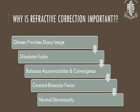Why is refractive correction important? Because glasses provide a very sharp image on the retina, then it stimulates fusion, thereby helping in stereopsis. It enables the patient to have stereopsis, and the glasses balance between accommodation and convergence, and also give constant binocular fusion and normal stereo acuity, which is 1 in 20 seconds.